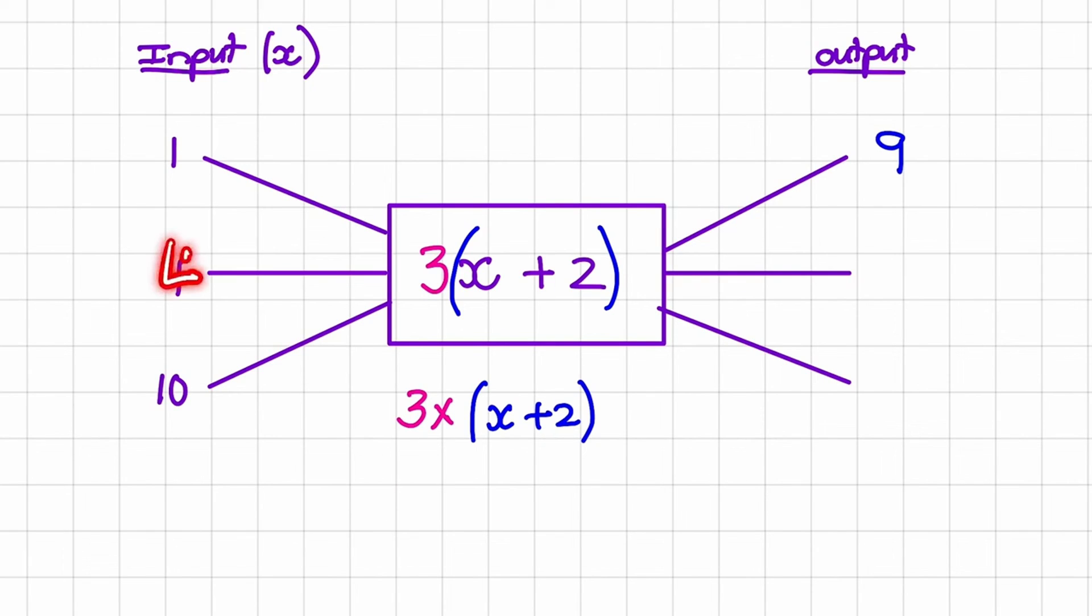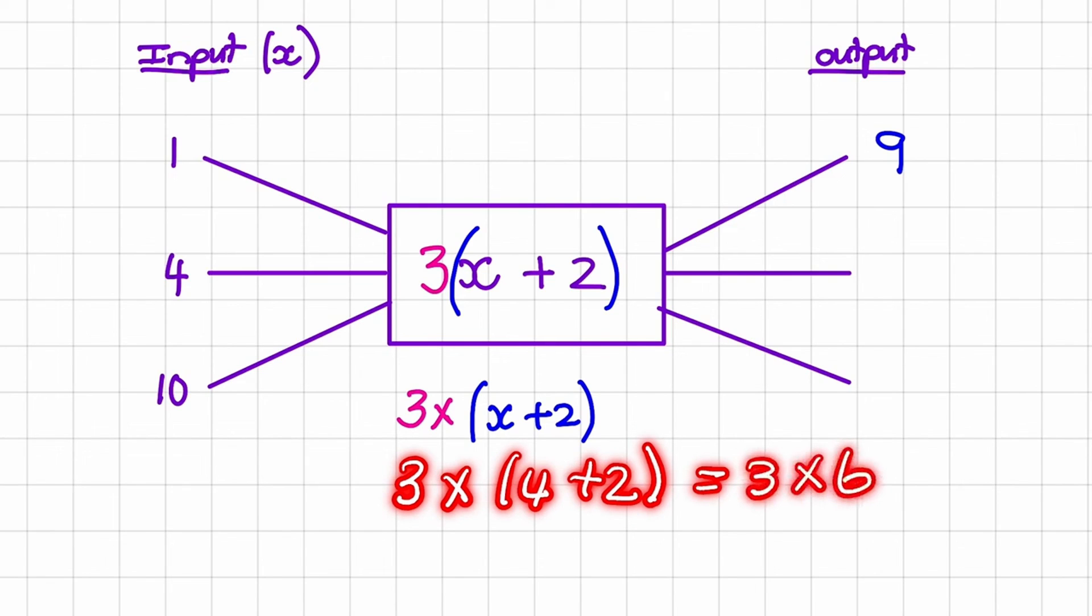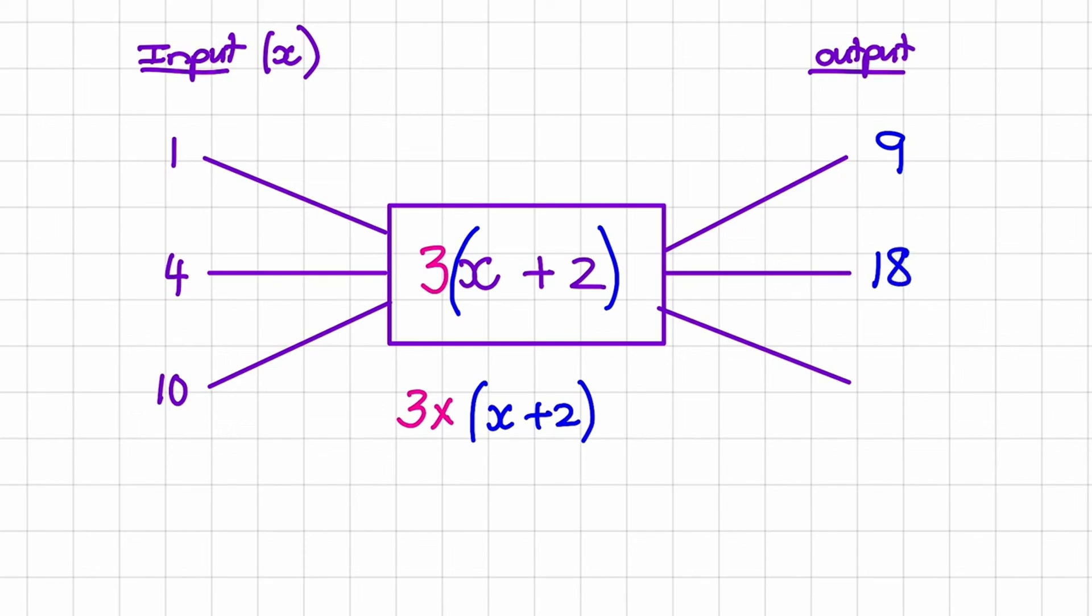Next we have 4 in the place of x. So it's 3 times 4 plus 2. But 4 plus 2 is 6. So it's 3 times 6. And that is equal to 18.